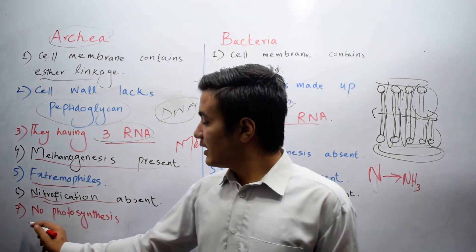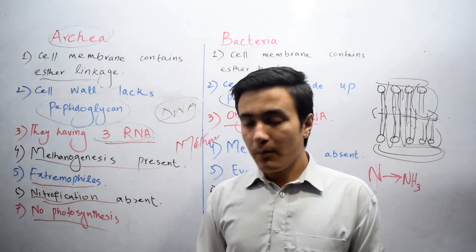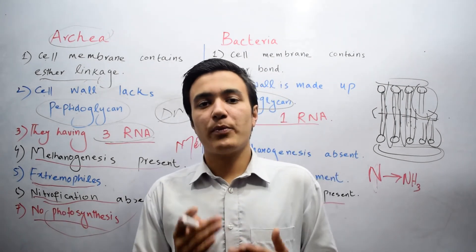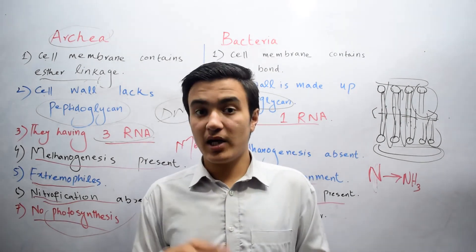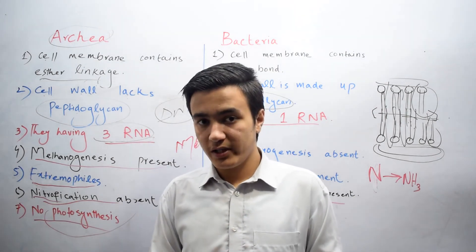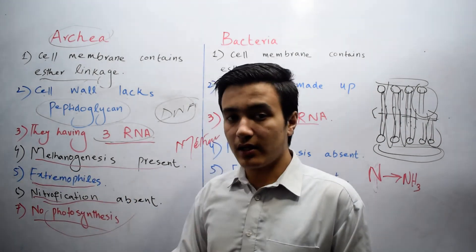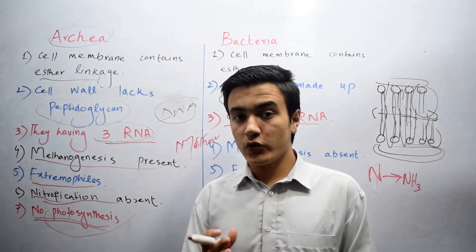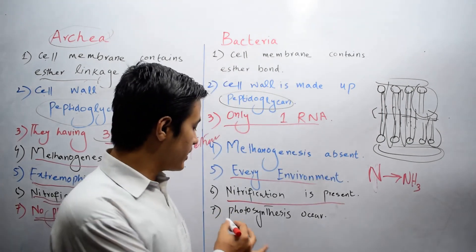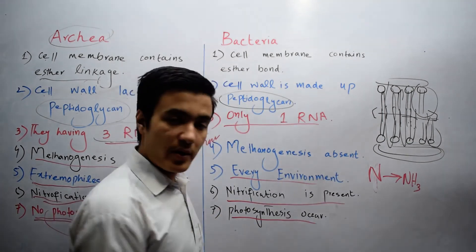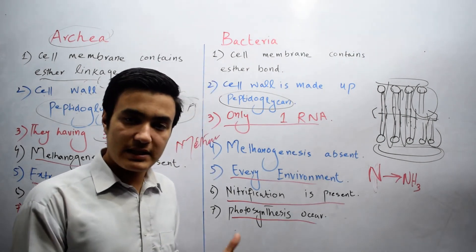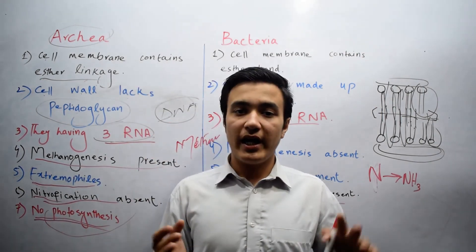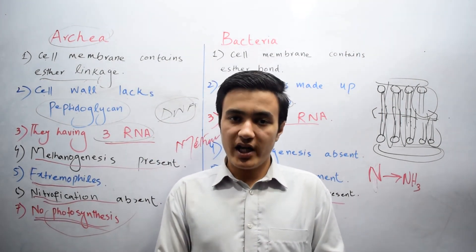The last difference: no photosynthesis in Archaea. Photosynthesis is a process in which an organism prepares its own food, just like plants. Archaea cannot prepare their own food, so photosynthesis does not occur in Archaea. While some Bacteria can prepare their own food, so photosynthesis occurs in those Bacteria. This was all about the differences between Archaea and Bacteria. Thanks for watching.